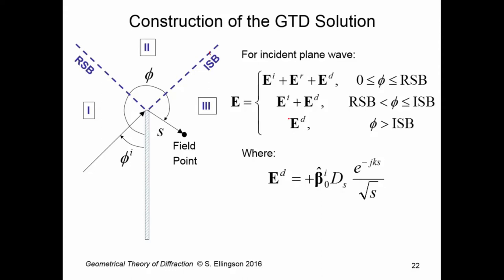Now, we construct the solution as follows. In region one, we have incident plus reflected plus diffracted. All three contributions are there. In region two, we have incident plus diffracted. Region three, we have only diffracted.